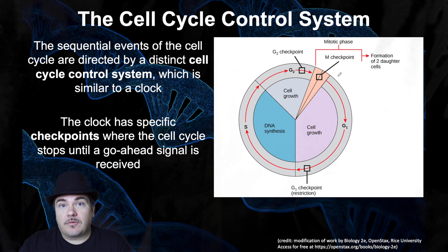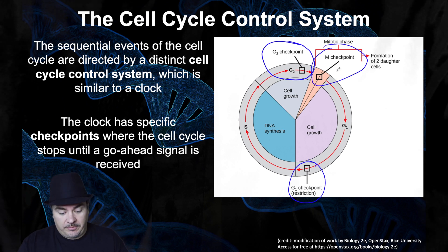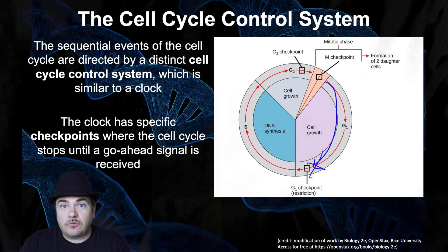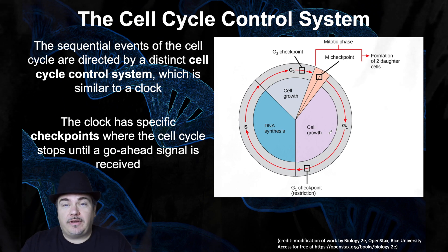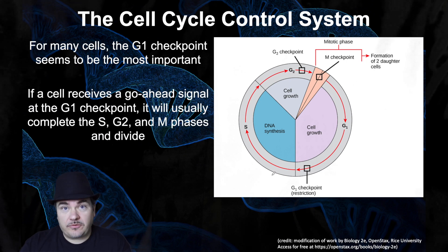It turns out there are places in the cell cycle called checkpoints. There's a checkpoint in G1, a checkpoint between G2 and mitosis, and a checkpoint in the middle of mitosis. What a checkpoint does is stop the cell from proceeding to the next part of the cell cycle — you're not ready to go there yet. The cell will stop at that checkpoint until it receives a signal that tells it to go ahead and pass.